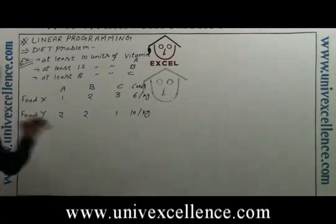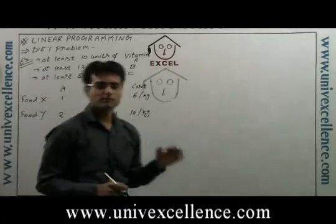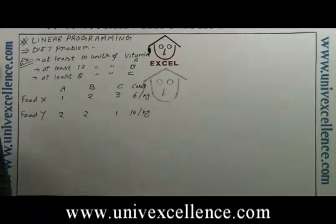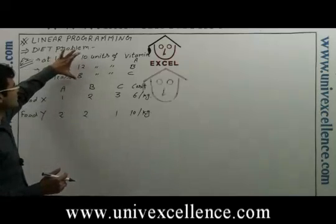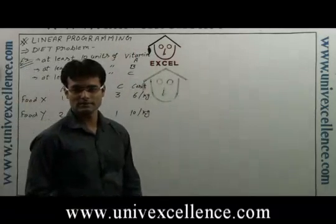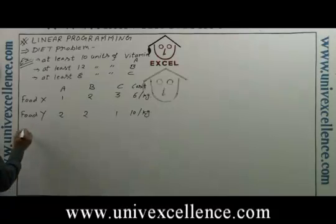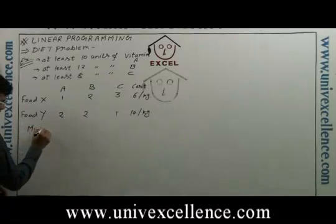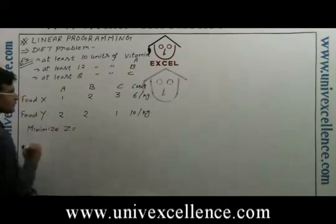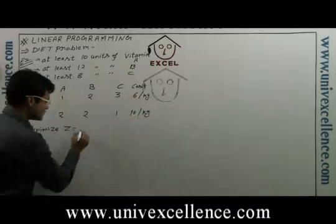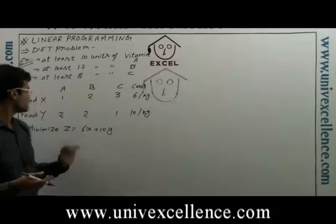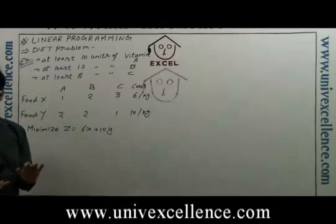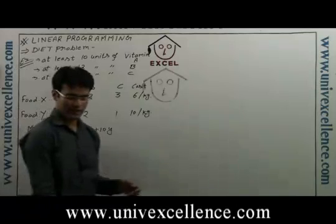We need to find the minimum cost at which we can prepare a mixture that satisfies all vitamin requirements. Since we have to minimize cost, the objective function is: minimize Z = 6X + 10Y, where X is the kilograms of food X and Y is the kilograms of food Y.